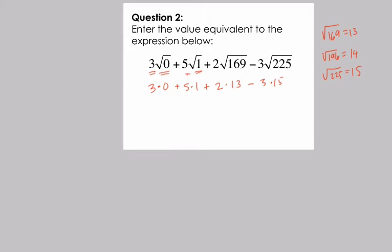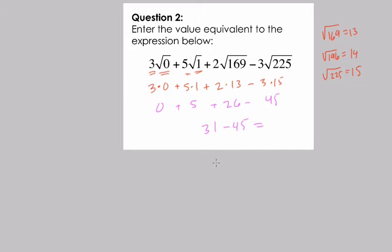Now we just use order of operations to compute: 0, 5, 26, 45. Then we add and subtract: 0 plus 5 plus 26 is 31, minus 45. If you run into a scenario like this, you can always figure out 45 minus 31, which is 14, and then reverse the sign. So the answer here is negative 14.